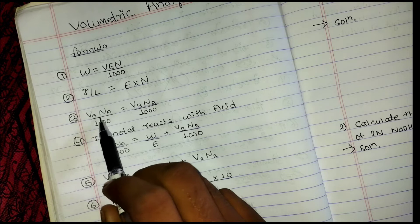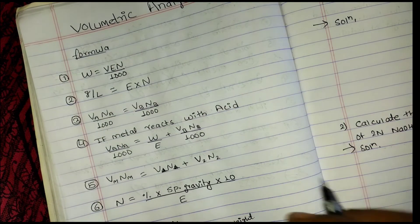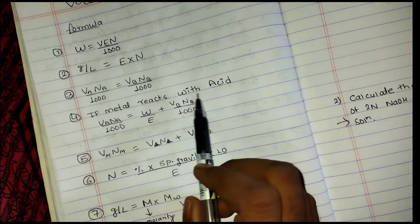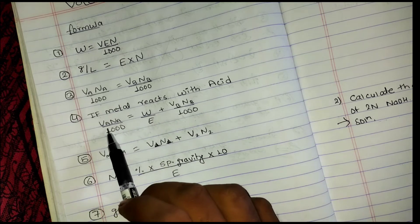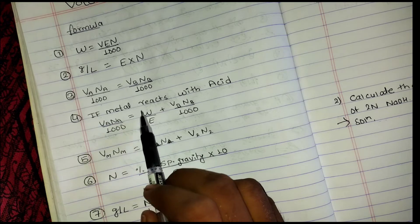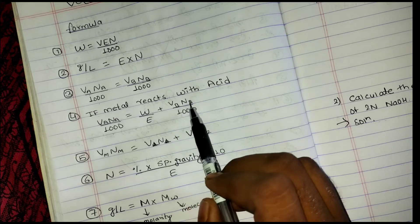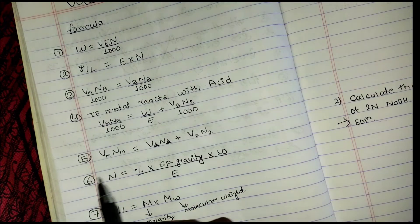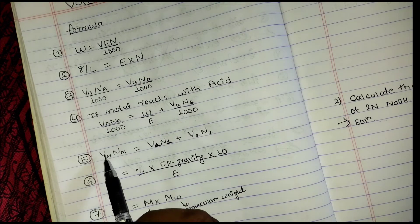Volume is in ml, so divide by 1000. For a metal reacting with acid, the formula becomes: weight / equivalent weight = (V_b × N_b) / 1000, where V_b is volume of base and N_b is normality of base.